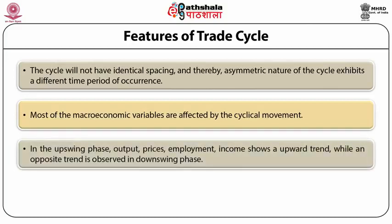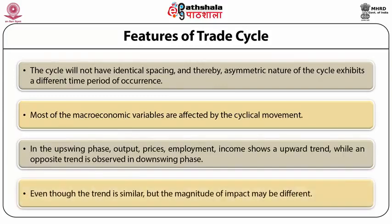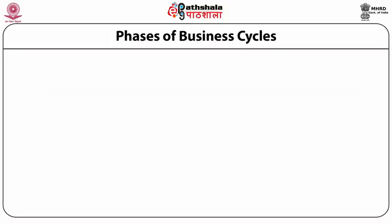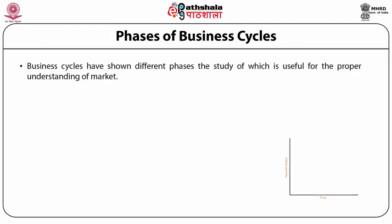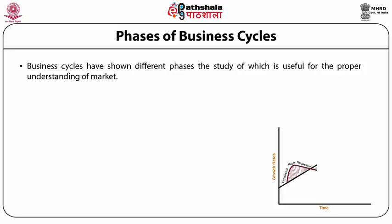Most macroeconomic variables are affected by cyclical movement. In the upswing phase, output, prices, employment, and income show an upward trend, while an opposite trend is observed in the downswing phase. Even though this trend is similar, the magnitude of impact may be different. In general, there are two phases of business cycles: prosperity and depression.